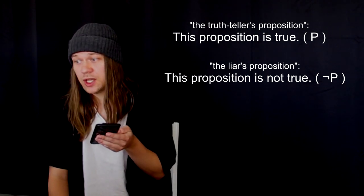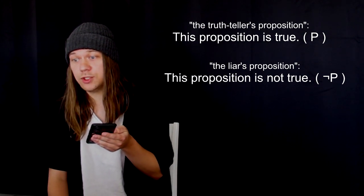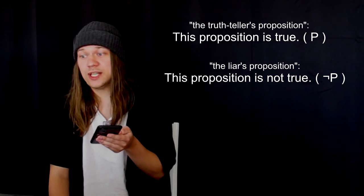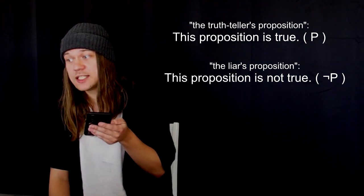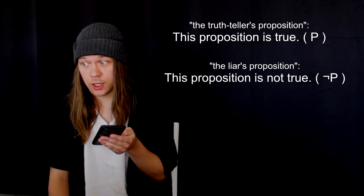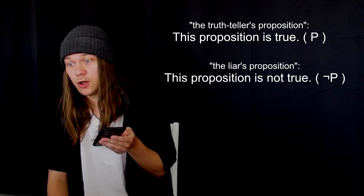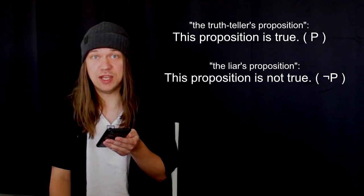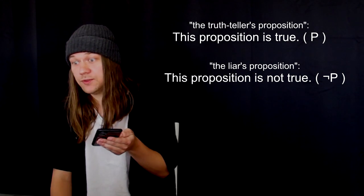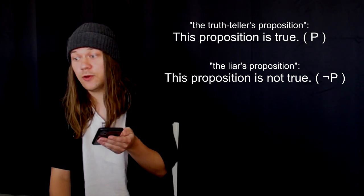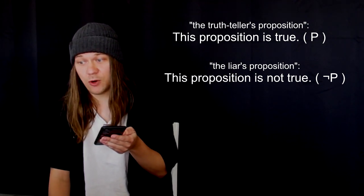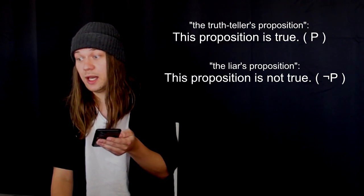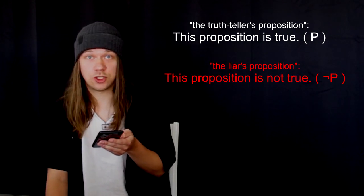The reason that the Liar's Paradox occurs is because there's a formal error being made, which is to neglect the fact that the liar's proposition is actually a negation of the truth-teller's proposition. Due to this neglect, it's possible to ask whether the liar's proposition, separated from its relationship to the truth-teller's proposition, is itself true or false. But this is an error, because if we are examining the liar's proposition, then we are already examining the possibility of the truth-teller's proposition being false. The truth value for P has already been determined when the liar's proposition is spoken. If you say that the liar's proposition is true, all you're saying is that the truth-teller's proposition is false. If you say that the liar's proposition is false, all you're saying is that the truth-teller's proposition is true.